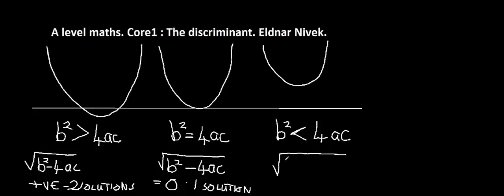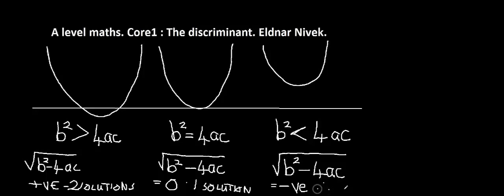If b squared is less than 4ac, so b squared minus 4ac — the discriminant — is negative. Now there's no square root of a negative quantity; no real number has a negative square root, so there are no solutions. And that's shown in the three graphs there.